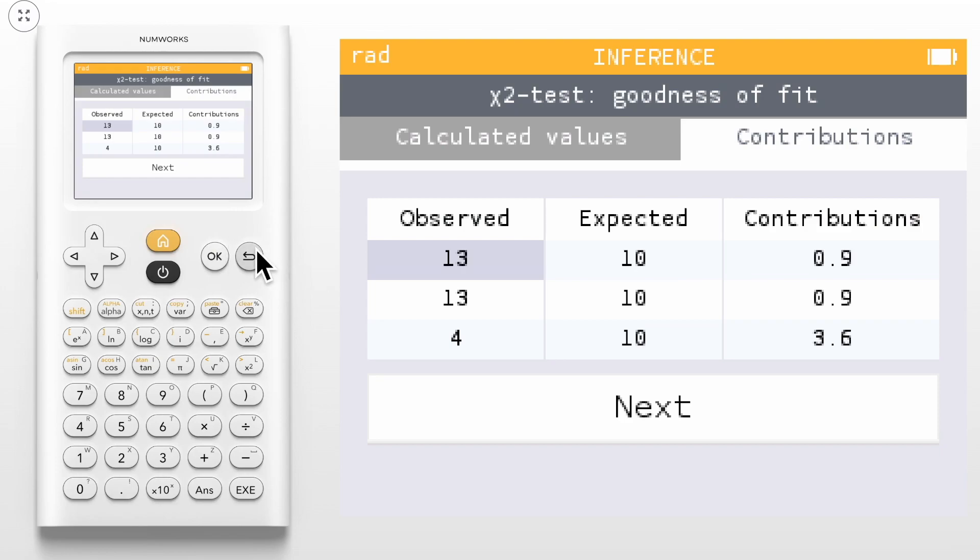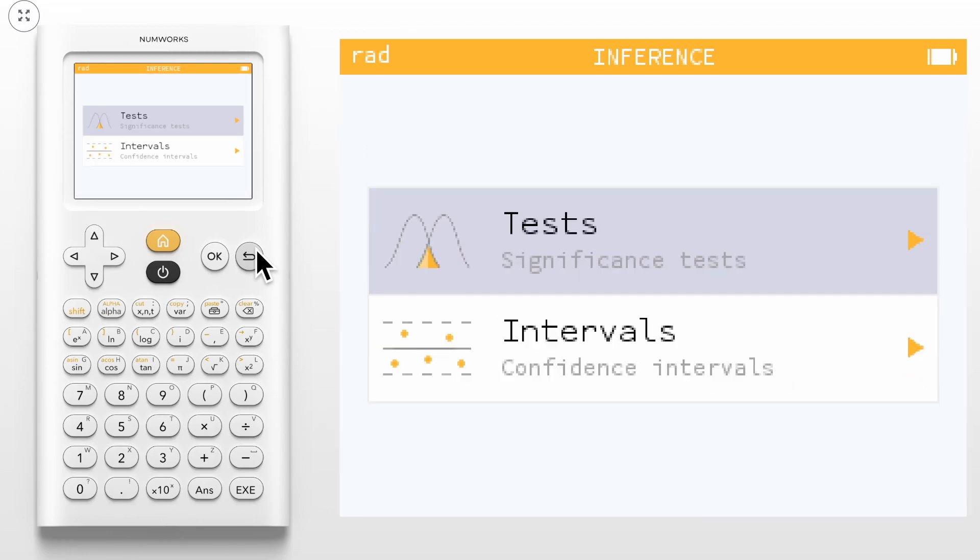To leave the test, hold the Back button down until you return to the main menu of the Inference app. For more tutorials, visit numworks.com.